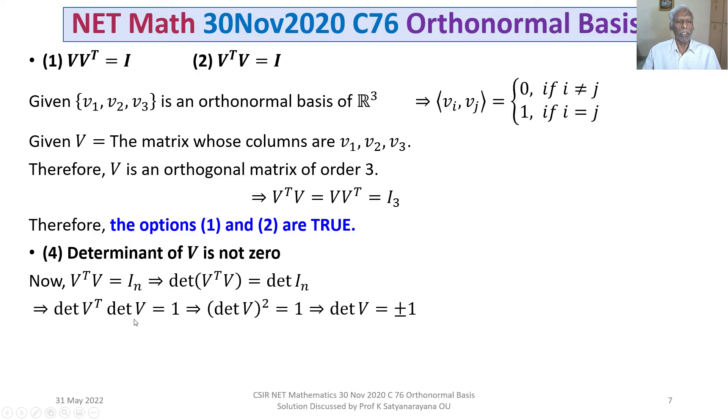And det(Vᵀ) is det(V), so (det V)² = 1 implies det(V) = ±1. Therefore, the determinant of V is not zero.